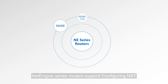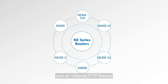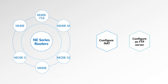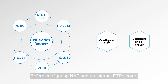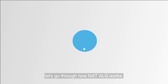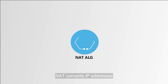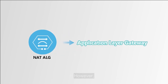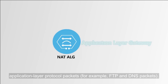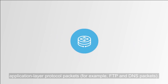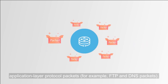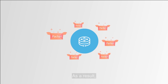Any router supports static configuring NAT and an internal FTP server. Before configuring NAT and an internal FTP server, let's go through how NAT ALG works. NAT converts IP addresses and port numbers at the IP layer; however, it cannot convert IP addresses and port numbers contained in application layer protocol packets, for example FTP and DNS packets.